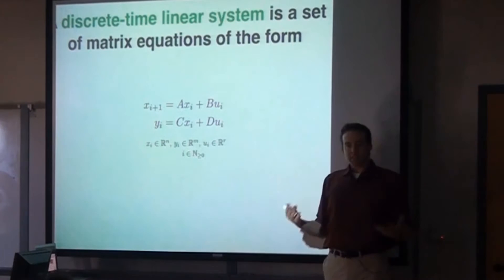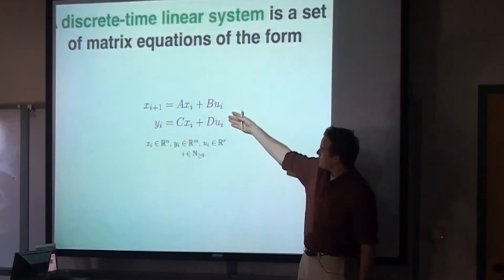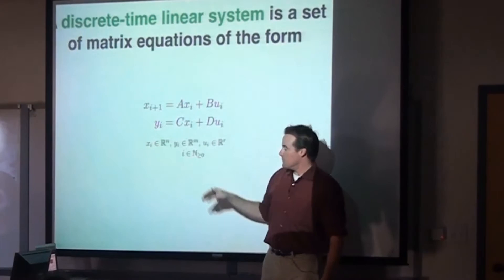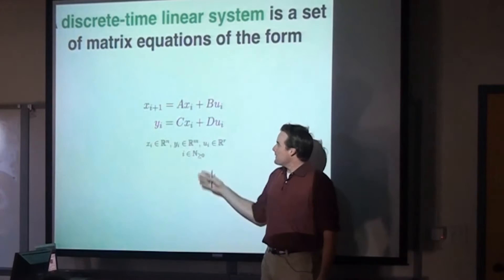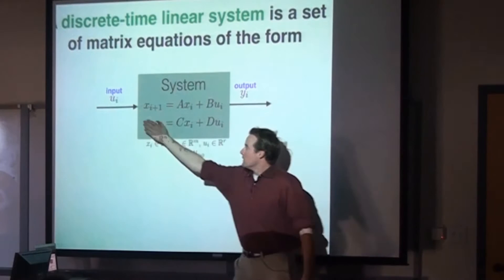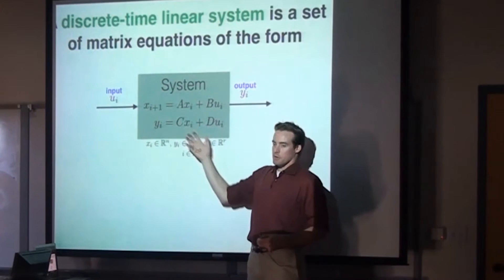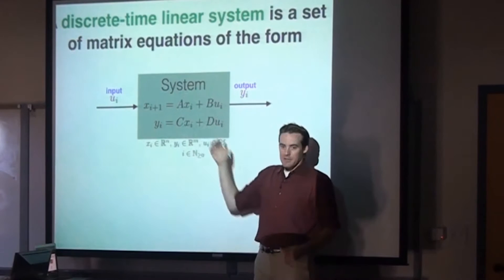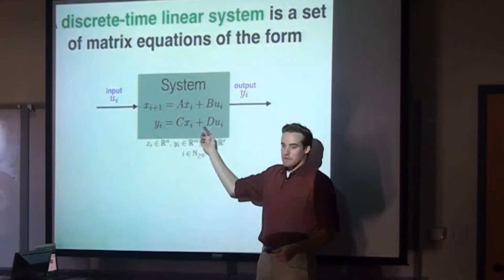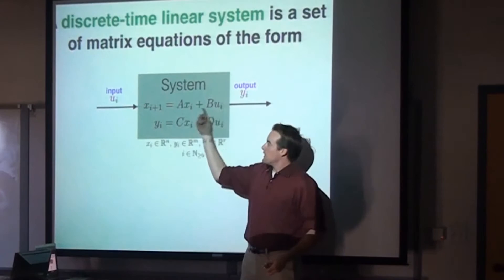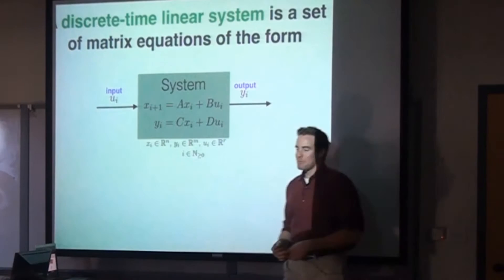A discrete time linear system is a set of matrix equations. These are two vector equations. The x's, y's, and u's are all vectors of various sizes. The subscript i is a time index — a natural number: 0, 1, 2, 3, and so on. There's some input u to the system; u0 comes in, and at the same time some output y0 is measured. The system has an internal state x that captures how the state evolves over time. You combine x0 and u0 with matrices A, B, C, and D — these matrices are constant, not time-dependent. That produces y0, what you read out of your system. The x0 and u0 go in, and Ax plus Bu combines to form x1, the state of the system in the next time step.